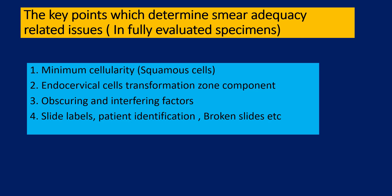Coming to the subject of adequacy of cervical smears, the key points which determine smear adequacy are as follows. You need to assess the cellularity of squamous cells, with a minimum cellularity criteria to be elaborated shortly. You have to look for the presence of endocervical or metaplastic cells representative of the transformation zone. You have to note obscuring and interfering factors, and also keep in mind factors like slide labels, patient identification, and broken slides.